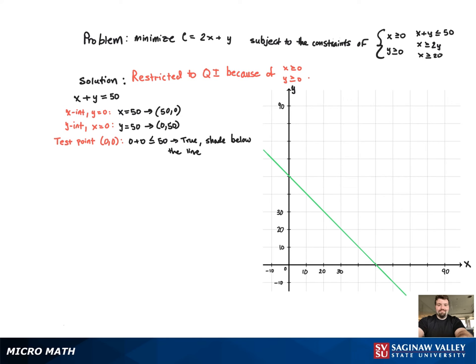Again, we're restricted to the first quadrant, so we're not shading the entire region below the line. Now moving on to the next inequality, x greater than or equal to 2y. Again, make it an equation and graph the line. We need two points. So if we can just find two points that are on the line, then we can graph it.